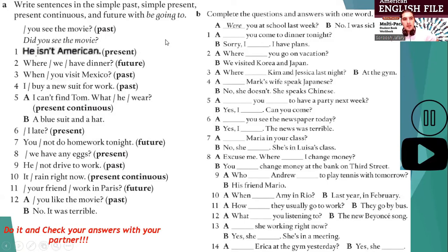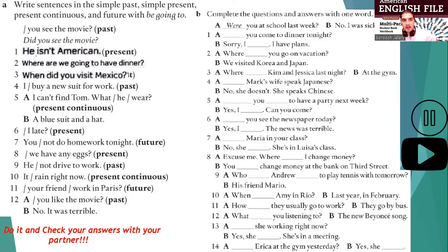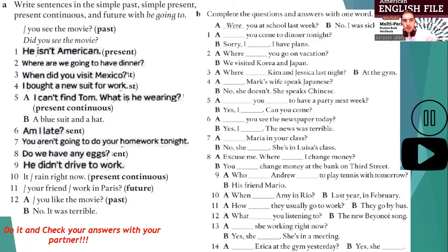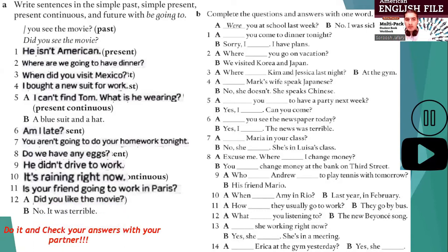Number four, past: What about a new suit for work? Number five, present continuous — it's happening now and it's continuing. What is he wearing? A blue suit and a hat. Number six, present. Number seven, future: You aren't going to do your homework tonight. Number eight, present: Do we have any eggs? Number nine: He didn't drive to work. Number ten, present continuous: It's raining right now. Eleven, future: Is your friend going to work in Paris? Number twelve, past: Did you like the movie? No, it was terrible.